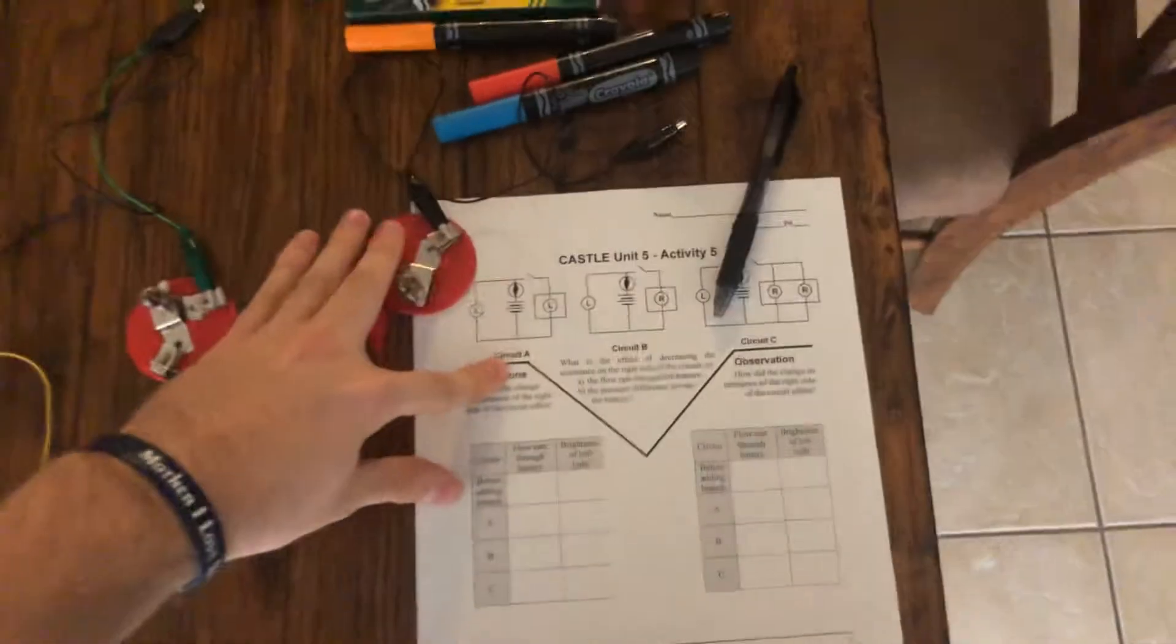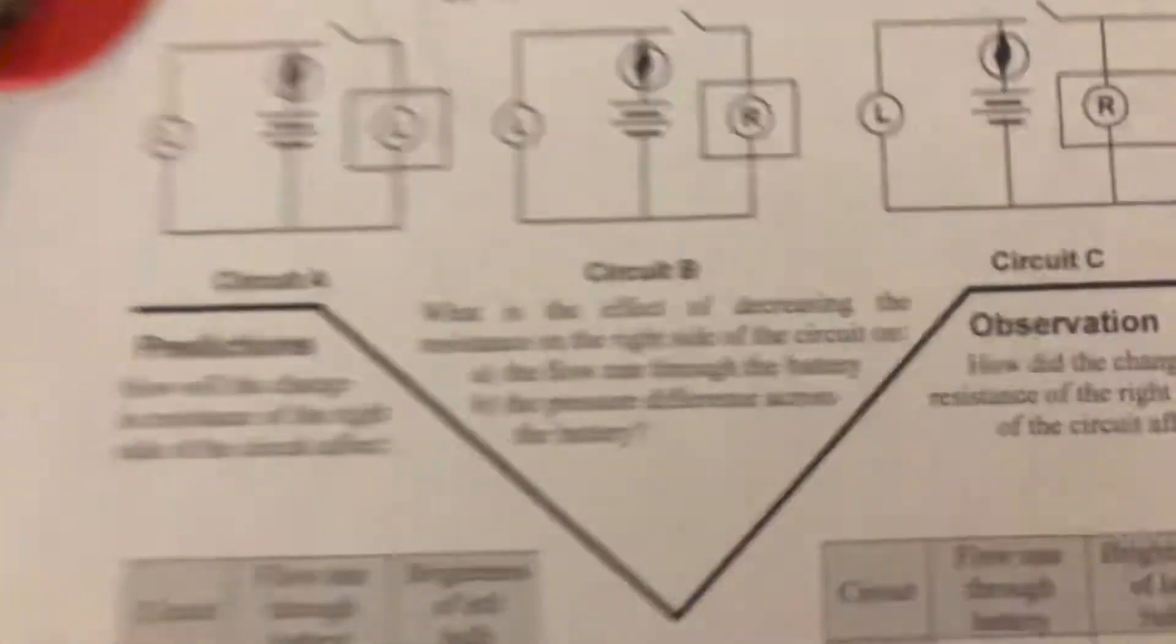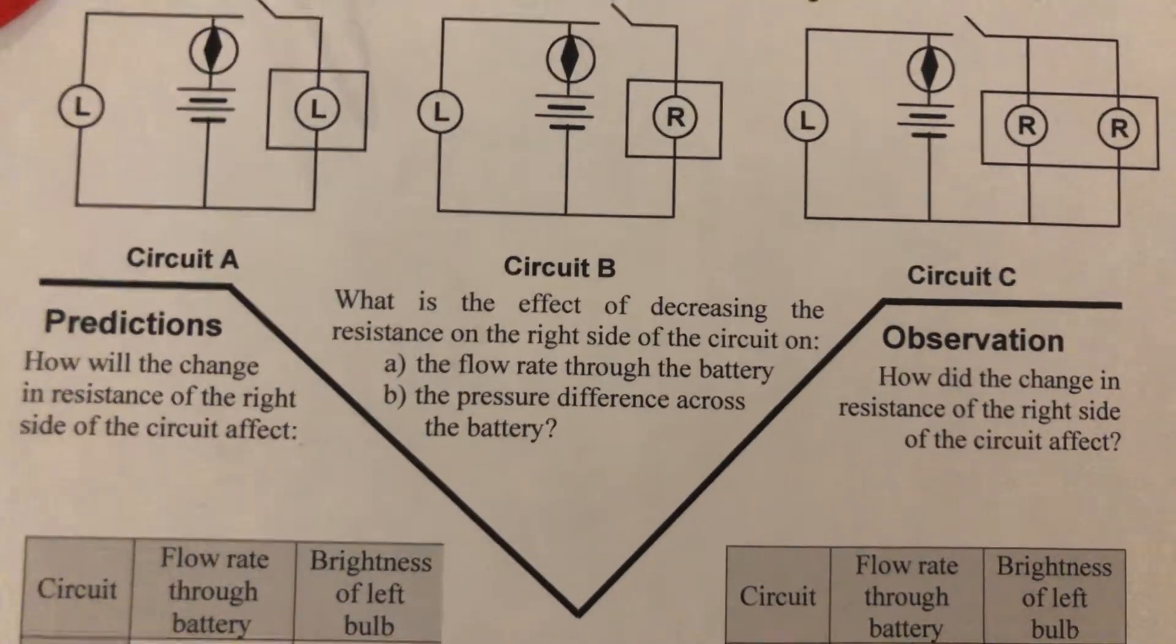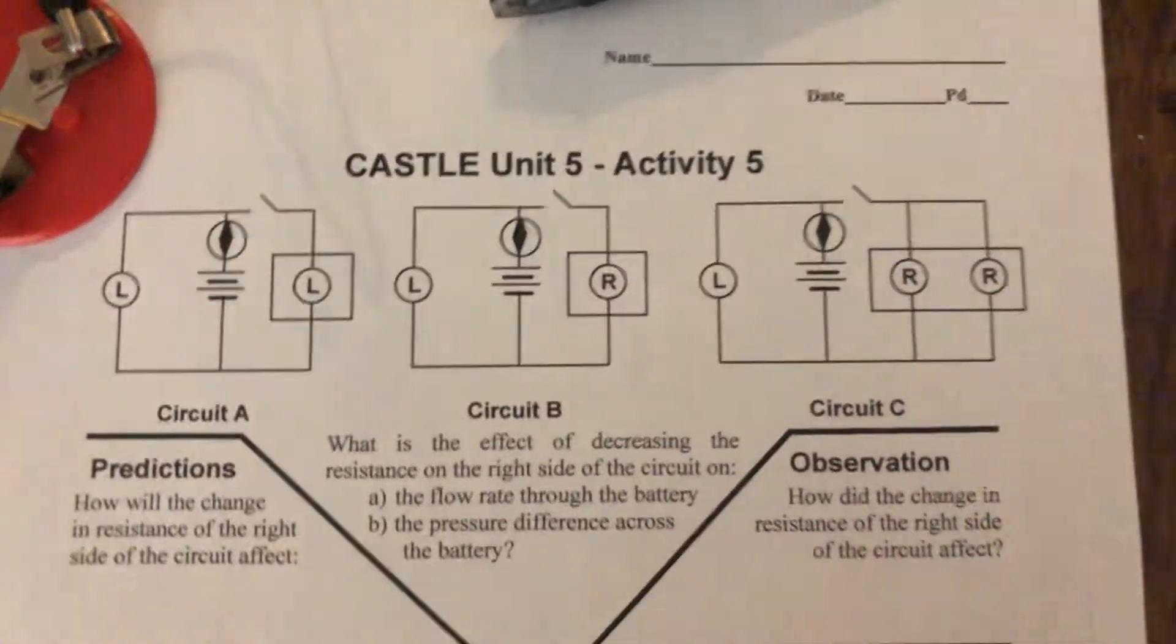Okay, so what we're going to look at here then is CASEL Unit 5, Activity 5. And the focus question on it is, what is the effect of decreasing the resistance on the right side of the circuit? So we have circuits A, B, C, and I'm actually going to do another one.